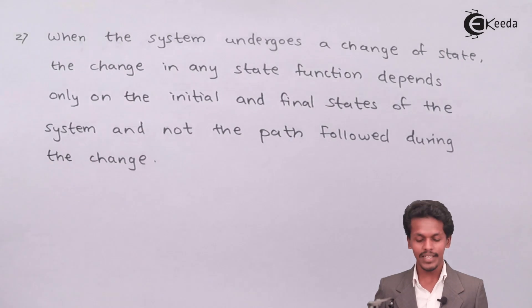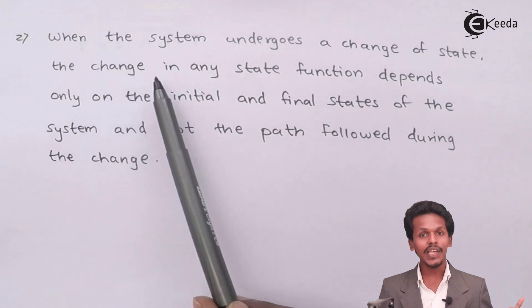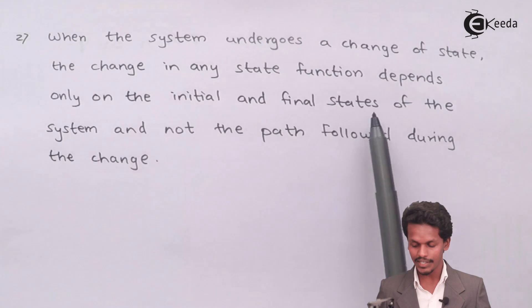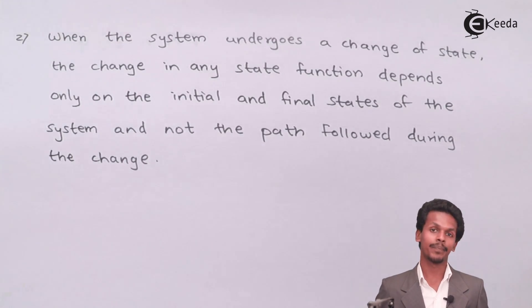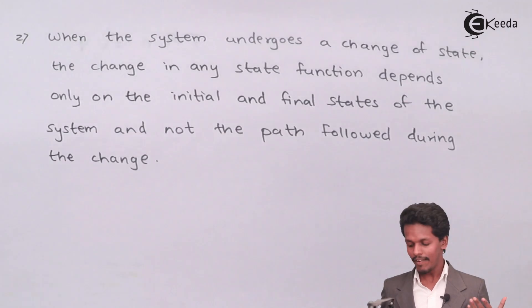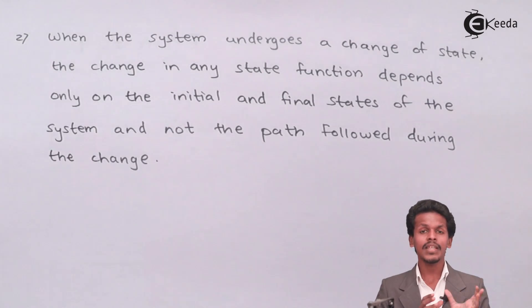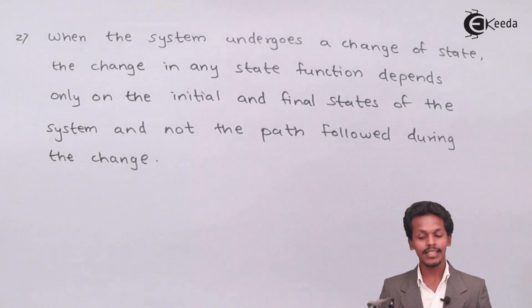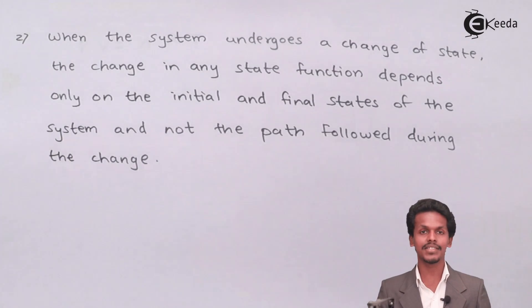The second property states that when a system undergoes a change of state, the change in any state function depends only on the initial and the final states of the system and not on the path followed during the change. As I mentioned initially, state functions are those properties which depend only on the initial and final state.